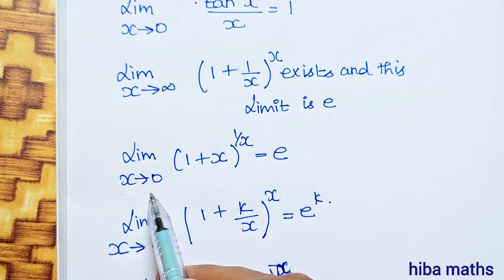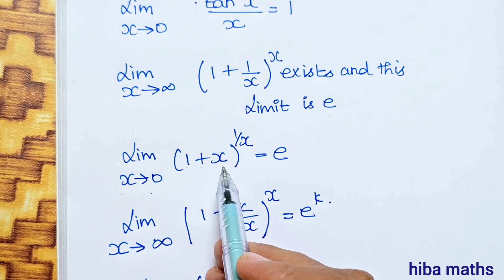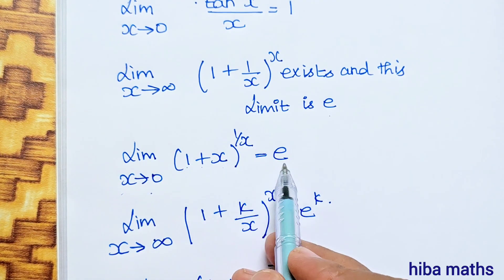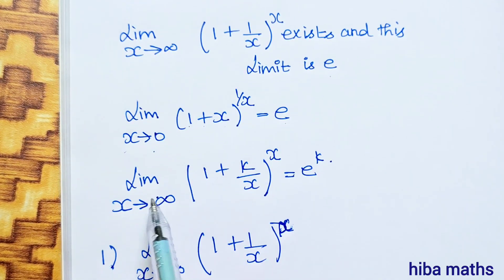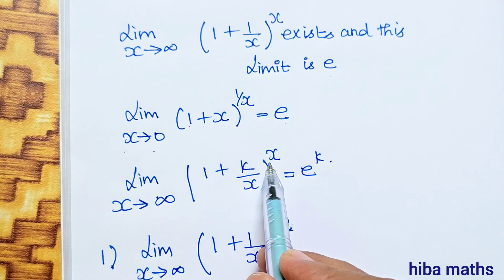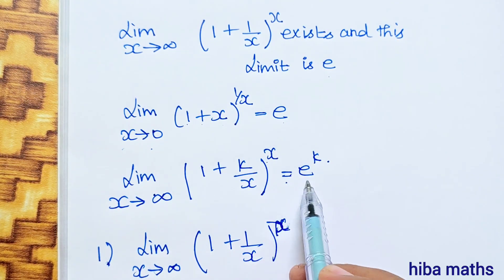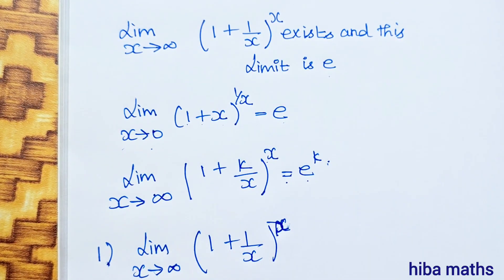Limit x turns to 0, 1 plus x, power 1 by x is equal to e. Limit x turns to infinity, 1 plus k by x, whole power x is equal to e power k. So if we use one of these formulas, we will use one type.